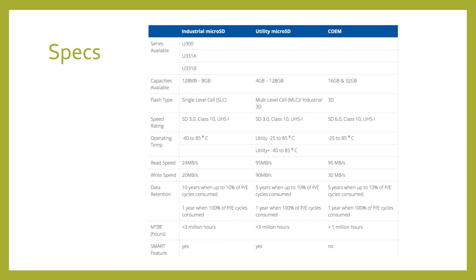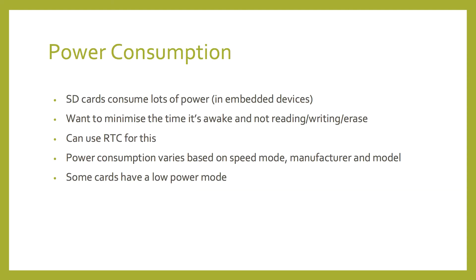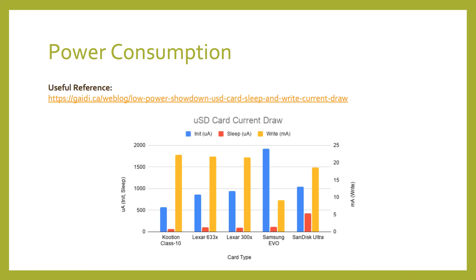Now let's move on to power consumption. SD cards consume a lot of power, and in embedded devices like our data logger, they're usually one of the most power-hungry components. The more you read and write to your card, the longer it needs to be on and the quicker you drain your batteries. That's why we switch off the SD card or put it into low power mode and wake it up with a real-time clock when we need to write to it. Some memory cards already have low power mode enabled — if it's not mentioned in the specs, a good rule of thumb is that it's not enabled. We've got a good comparison of some common SD cards in the terminology sheet.